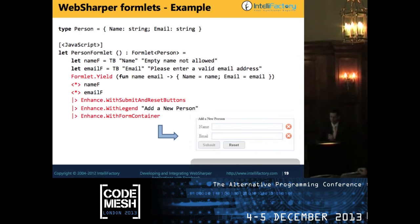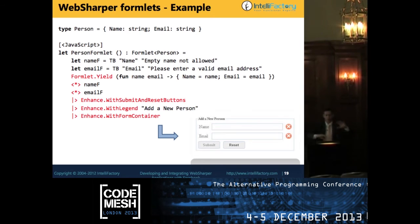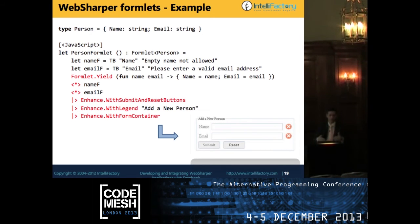Once you start combining formlets, you use the star operator and formlet yield operator. You get a combined formlet, wrap it in a legend box and form container for CSS layout. From those five or ten lines, you get a web form that performs client-side validation and doesn't allow submission until values are filled in, posting back as a record of string-string. You can combine two formlets side by side and render them horizontally. We use tables for the rendering layout internally.